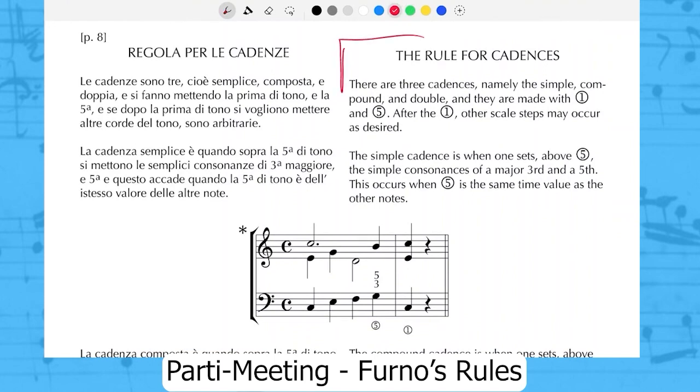There are three cadences, namely the simple, compound and double, and they are made with scale degree one and scale degree five or rather bass note one and bass note five. Then after the scale degree one, other scale steps may occur as desired.